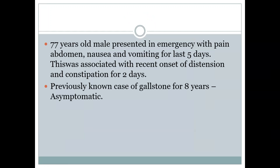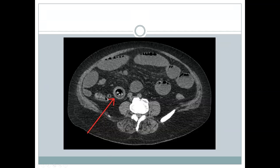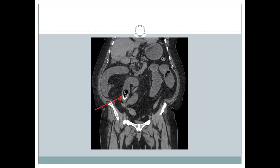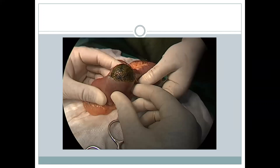The second case is a 77-year-old male who presented to emergency with pain abdomen, nausea, and vomiting for the last five days, associated with recent onset of distension and constipation for two days. He was a previously known case of gallstone for eight years but was asymptomatic. CT showed a gallstone in the distal ileal loops with different densities visible, small bowel obstruction signs, dilated bowel loops, and air-fluid levels. The coronal image confirmed the gallstone, and emergency surgery was performed to remove it.